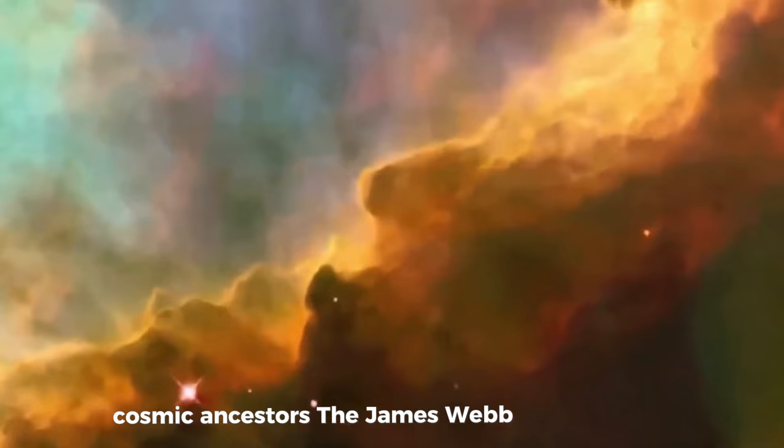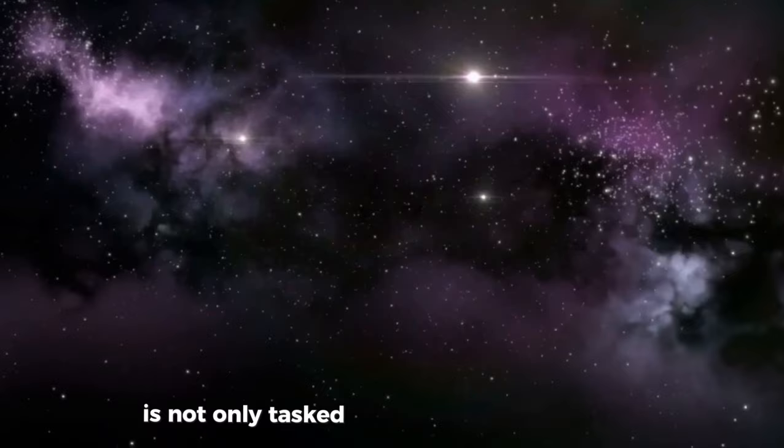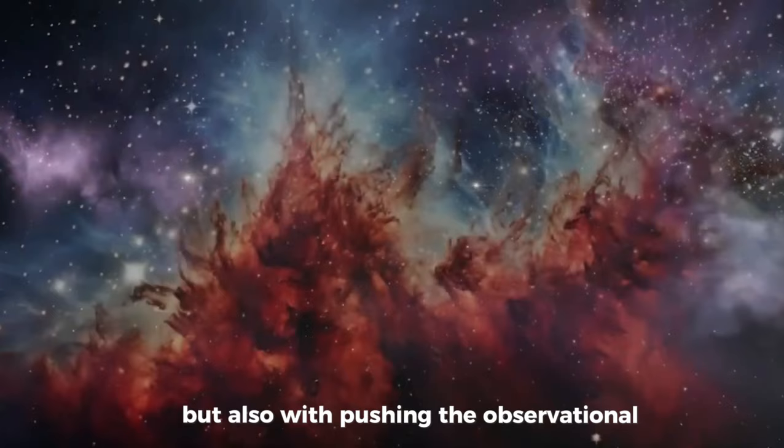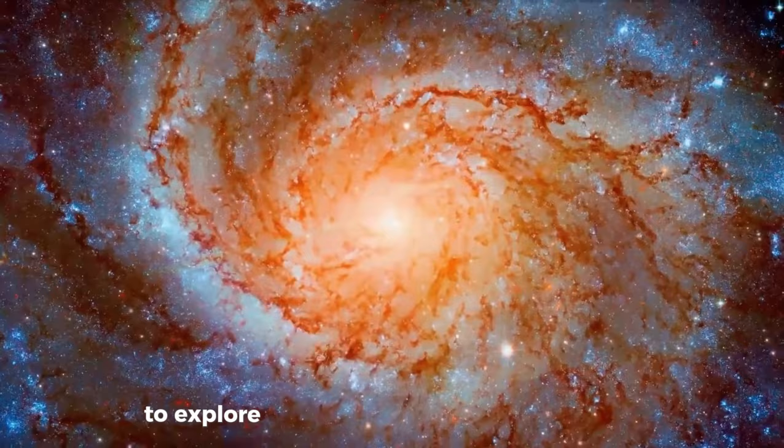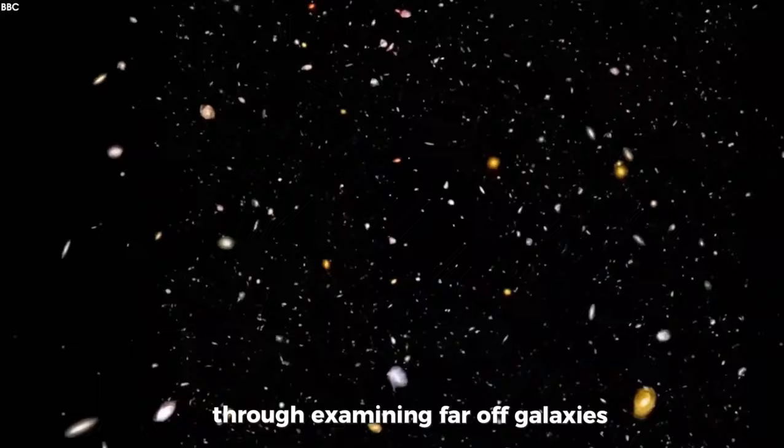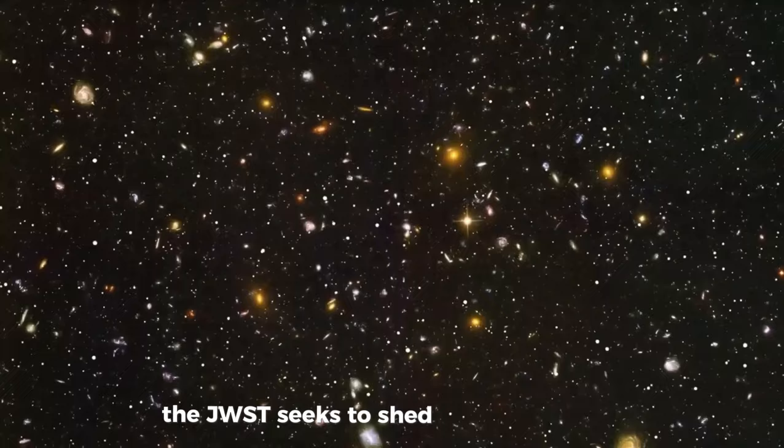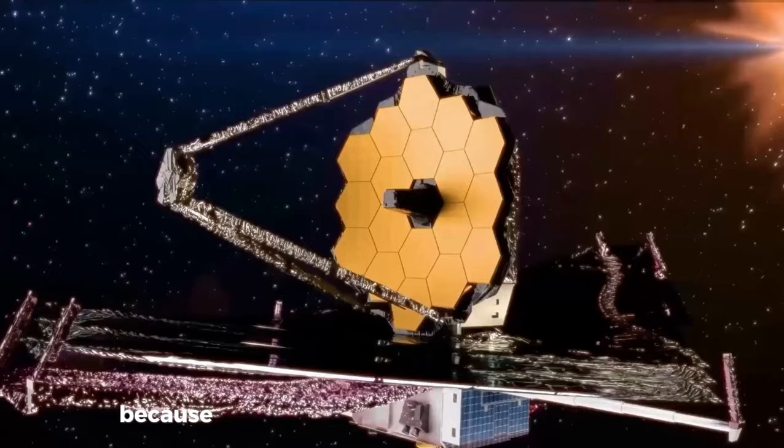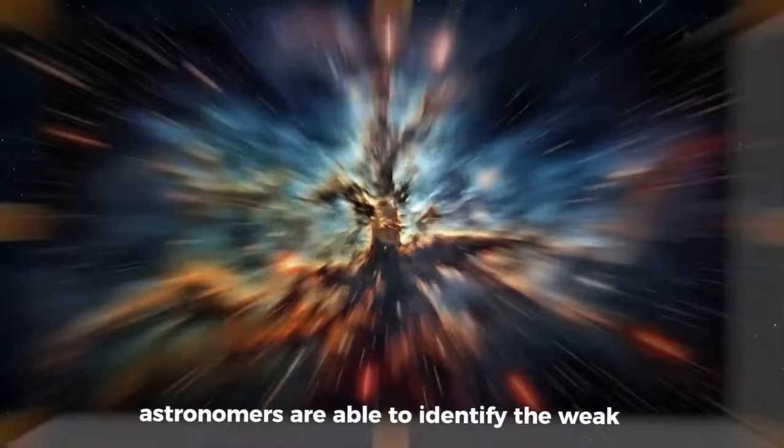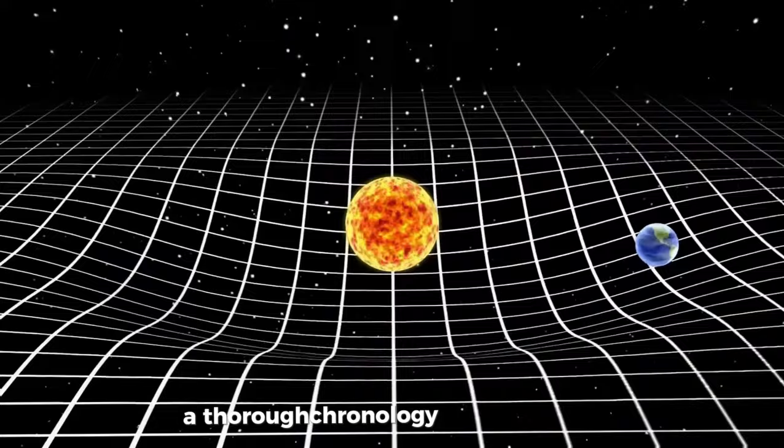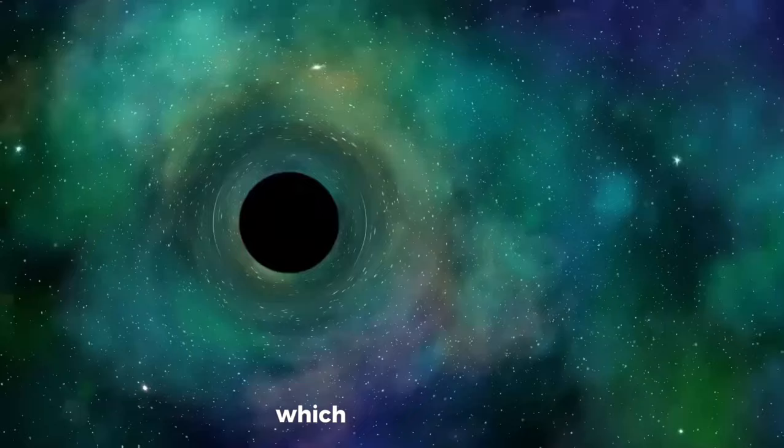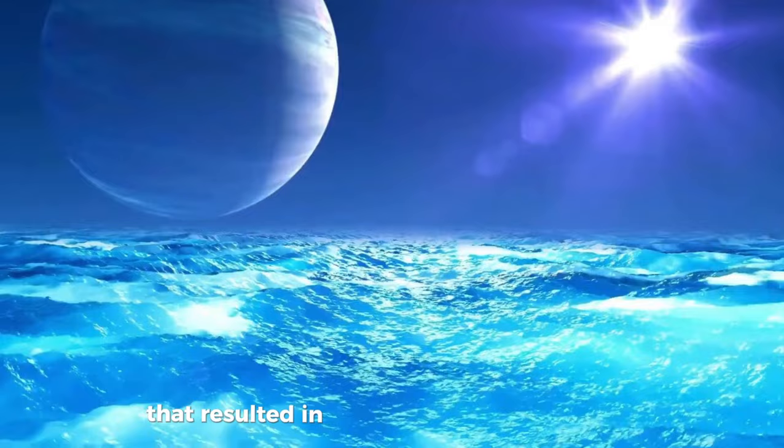The James Webb Space Telescope is not only tasked with finding the oldest stars but also with pushing the observational boundaries to explore the farthest reaches of the universe. Through examining far-off galaxies, the JWST seeks to shed light on the origins and growth of cosmic structures. Because of the telescope's extraordinary sensitivity, astronomers are able to identify the weak light that early universe galaxies emitted. This makes it possible to put together a thorough chronology of cosmic history, which aids scientists in understanding the processes that resulted in the different kinds of galaxies that we see today.